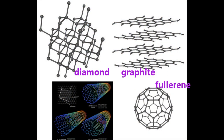So to summarise: diamond has four strong bonds, it's an insulator with a tetrahedral arrangement. Graphite has layers separated by weak van der Waals forces, and those delocalised electrons between the layers allow electricity to be conducted. C60 is a fullerene made of pentagons and hexagons, and that is a semiconductor.